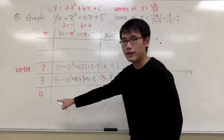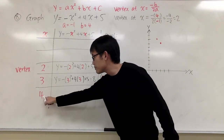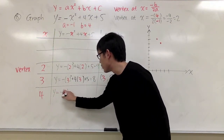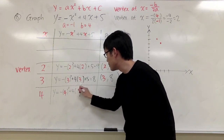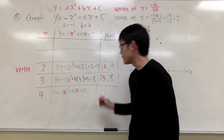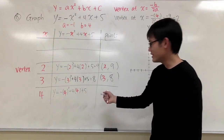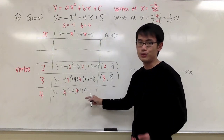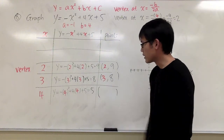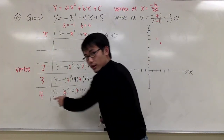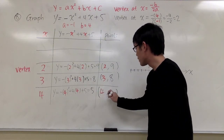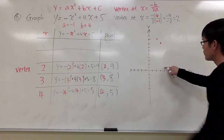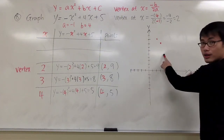Let's do another one when x equals 4. Plugging 4 into all the x: y equals negative 4 squared plus 4 times 4 plus 5. That is negative 16 plus 16, which is 0, plus 5, equals 5. So the point is (4, 5). On the graph, go to x equals 4 and up to 5 — it's right there.